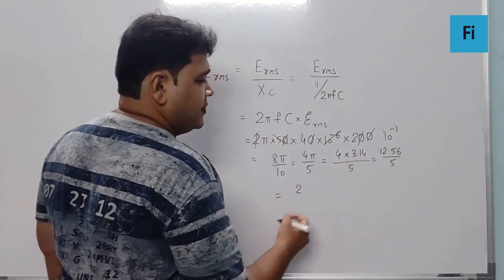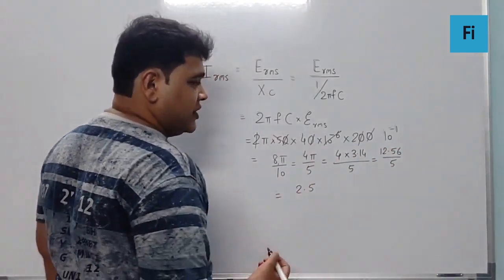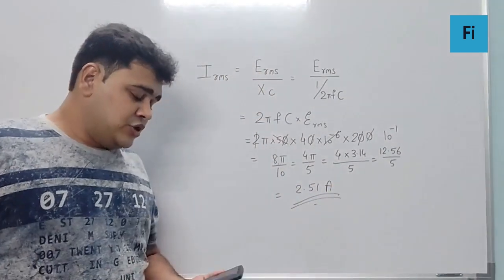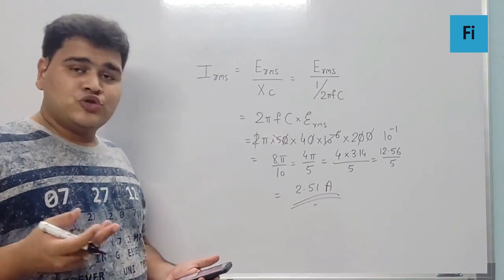So now this will be 5 into 10. We have left to be 25, so 12.56 by 5, so 2.5 approximately. So the closest option we have over here is 2.5.